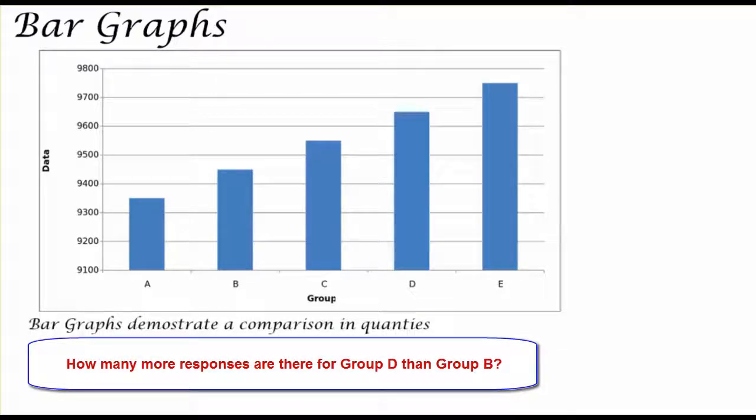So let's take a look at a question on how we can pull the answer from this bar graph. How much more responses were there for D than B? So D has about 9,650 responses by looking at our graph, and B has about 9,450 responses. So when we do this subtraction, we're able to get that there was about a 200 response difference between group D and group B. And by repeating this process for other groups, we can better make conclusions about our data as a whole.